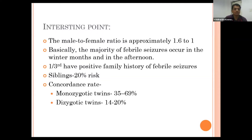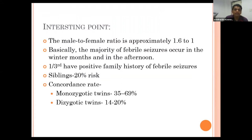There is a slight male predominance, and the majority of febrile seizures occur in winter months and in the afternoon, though in the Indian scenario this could not be established. 33 percent of patients have a positive family history of febrile seizure, and siblings have a 20 percent risk of developing febrile seizure. In monozygotic twins, concordance rate is about 35 to 70 percent, and in dizygotic twins it is 14 to 20 percent.